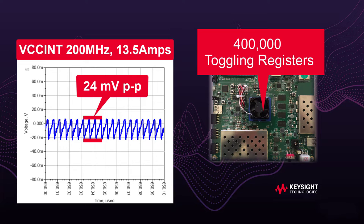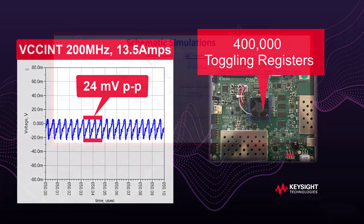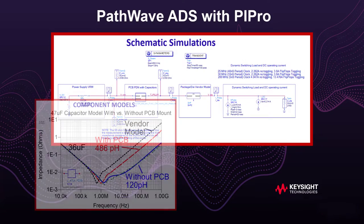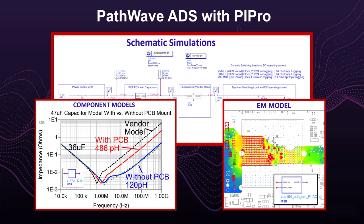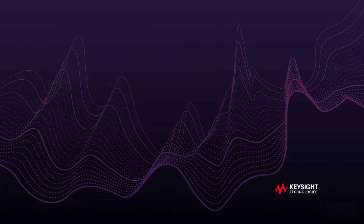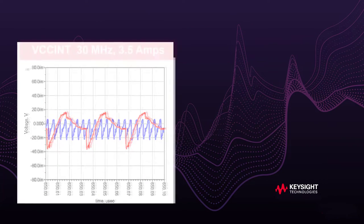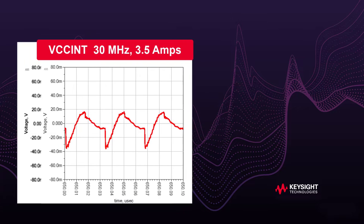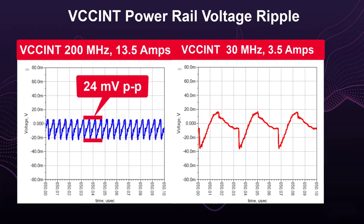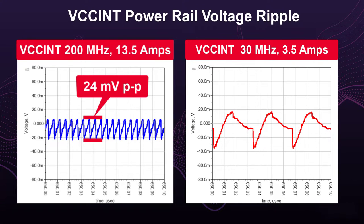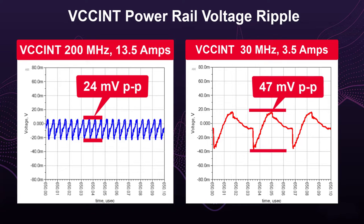I thought that a faster switching load with more current would be worst case, but PathWave ADS simulation with accurate component and PCB EM models proved me wrong. Demonstrated with simulation and verified with measurement, it was discovered that the worst-case noise is at 30 megahertz with only 3.5 amps. This plot shows the noise doubling to 47 millivolts peak-to-peak even though the frequency is lower and the DC current is less.